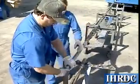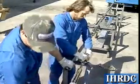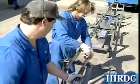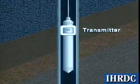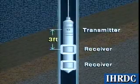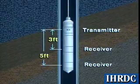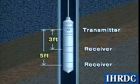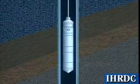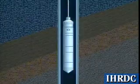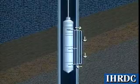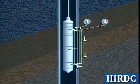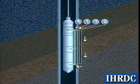The cement bond log, or CBL, is an acoustic device used to detect the presence or absence of a cement bond between the casing and formation. The tool includes an acoustic transmitter and usually two receivers located 3 feet and 5 feet (0.91 and 1.52 meters) from the transmitter. The tool, which must be well-centered, emits an acoustic signal that is detected by these receivers after traveling one of four possible acoustic paths from the transmitter to the receiver.